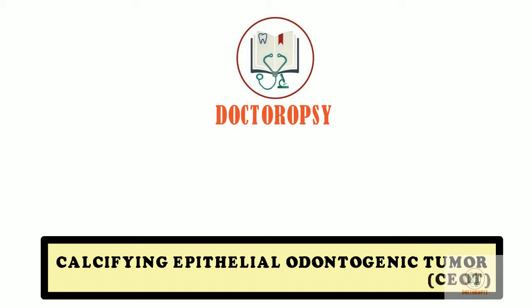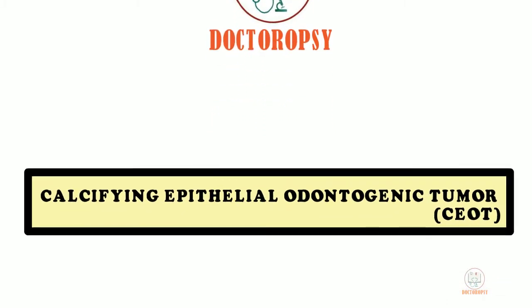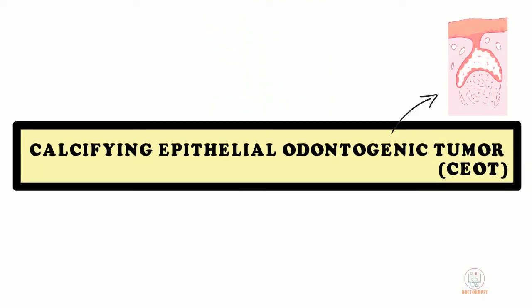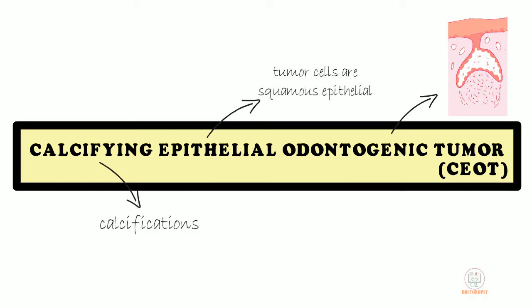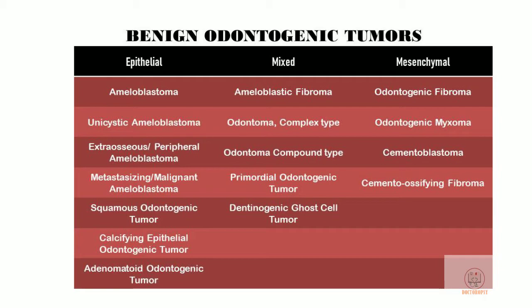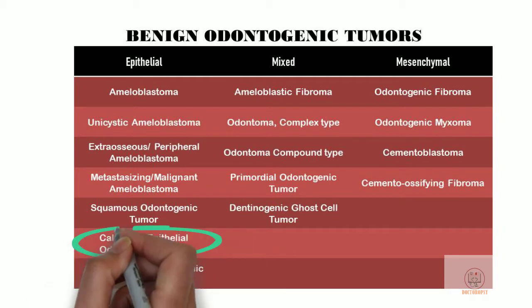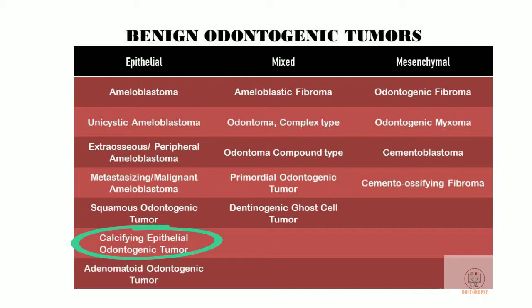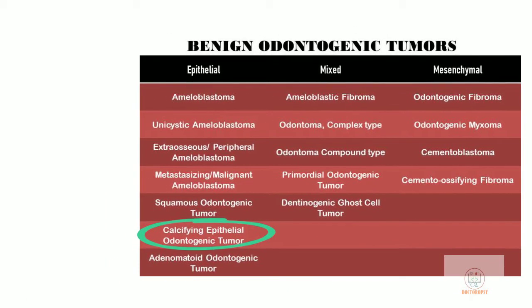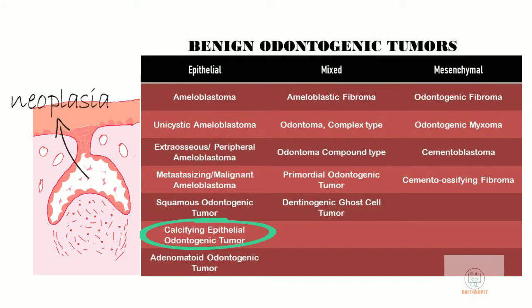Calcifying epithelial odontogenic tumour, or CEOT, is a benign tumour of odontogenic origin. Histologically, it shows squamous epithelial cells and has calcified material. In the classification of odontogenic tumours, CEOT is classified in the epithelial group, as only the epithelial component shows neoplasm and not the connective tissue.